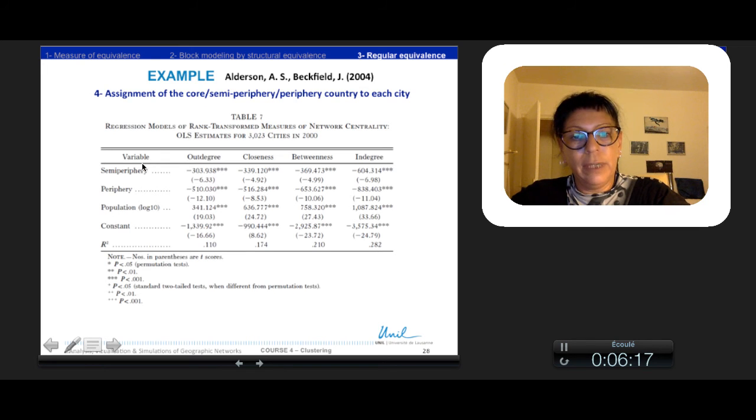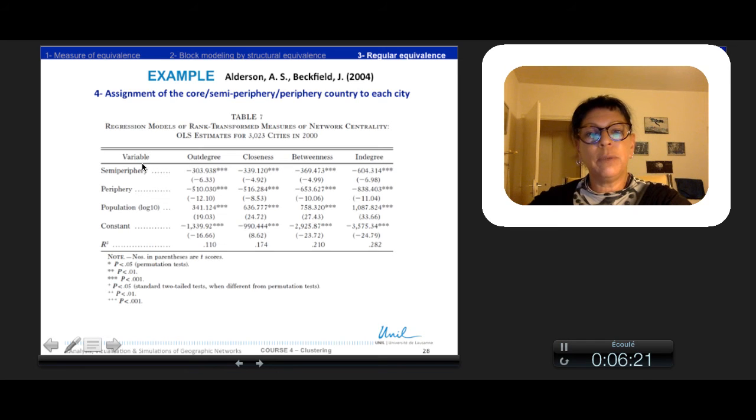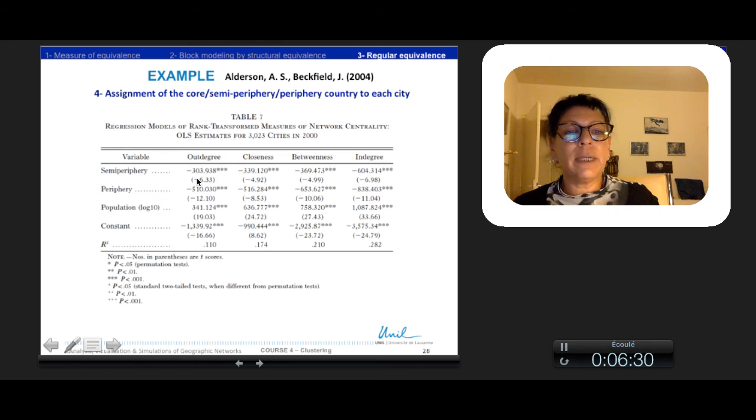In order to test the correspondence between cities' positions and their respective country position, they did not use a classical correlation because network data violate the independence assumption of standard statistics. Instead, they used a test derived from permutation tests that we'll see in the following courses.